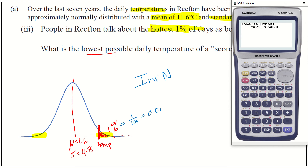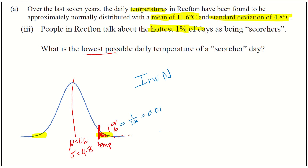And that gives me a temperature of 22 point — I'll go to one decimal place, as that's fine for temperatures — so 22.8 degrees. I'm going to state the temperature is 22.8 degrees Celsius. I always want to put my units with that as well, and that is to one decimal place.